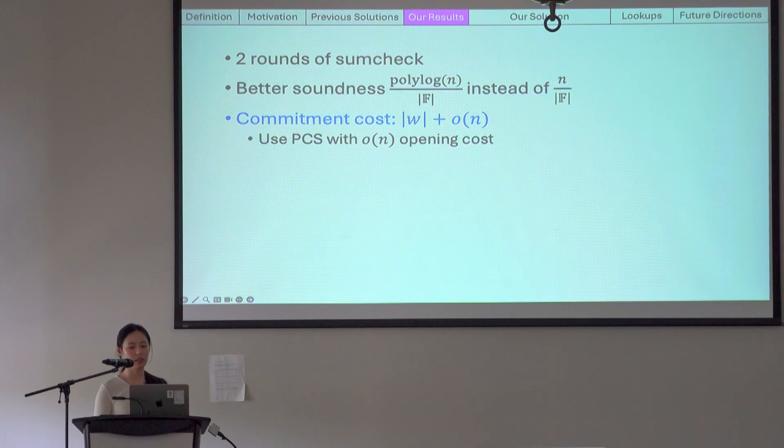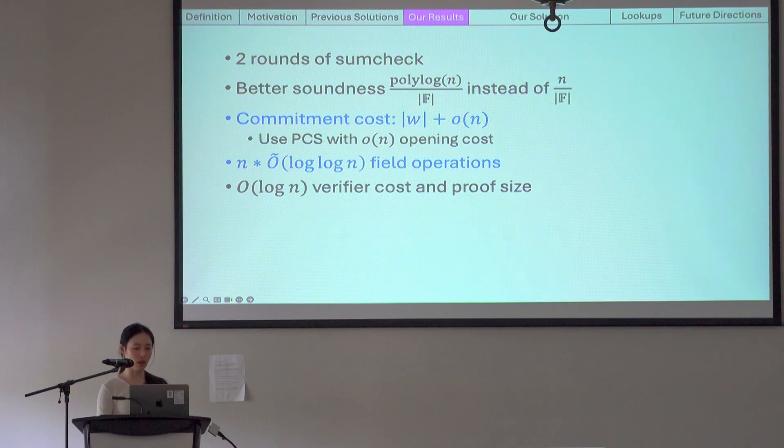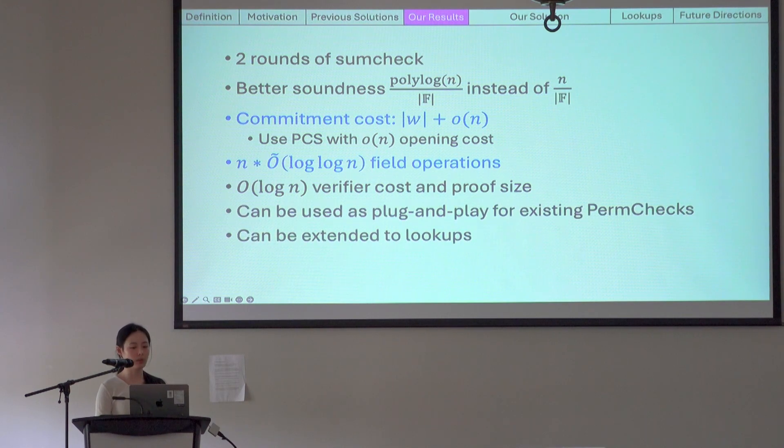The commitment cost is the cost of committing to the witness, plus the opening cost of the polynomial commitments. So we do require using polynomial commitment schemes with sublinear opening costs, such as KZG or DORY. The total number of field operations done by the prover is asymptotic to n log log n, hence the title, almost linear time. The verifier cost and the proof size are both logarithmic, and the resulting permutation check can be used to replace any existing permutation check and can also be extended to lookups.